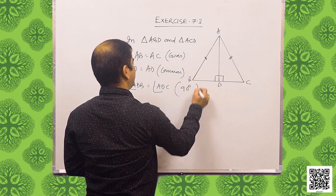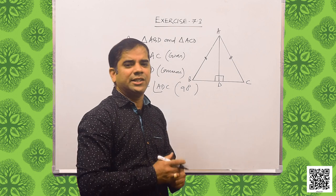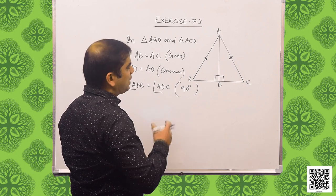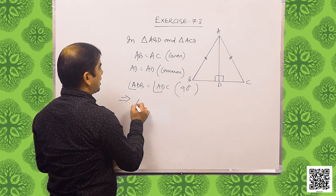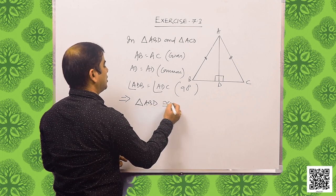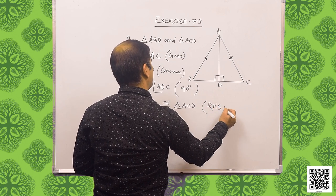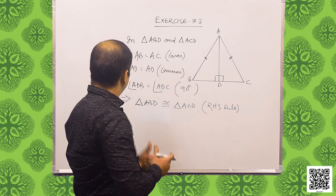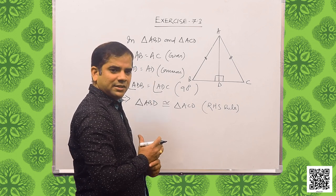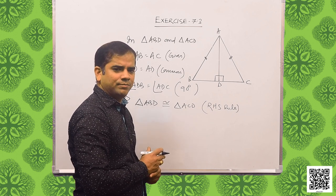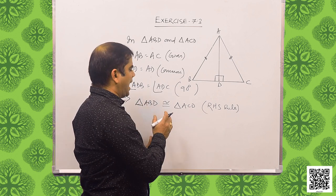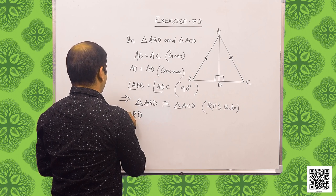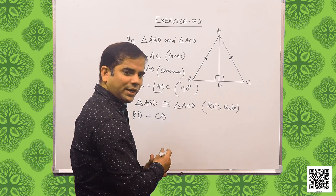Because it is 90 degrees — it is the altitude. So we have two sides and a right angle. That implies triangle ABD is congruent to triangle ACD by RHS rule, since RHS says if two sides and a right angle are present, we can apply RHS congruency. Therefore BD is equal to CD by CPCT.